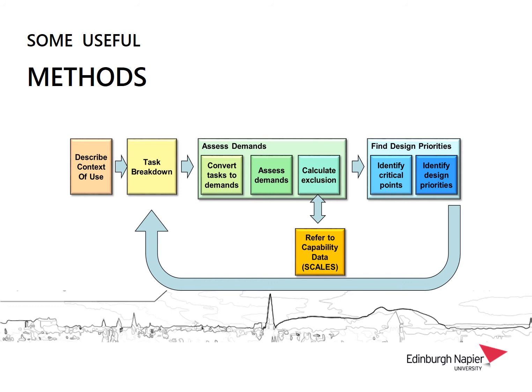Some useful methods that come from inclusive design are based around the idea of iterative design — you go around a loop of design examining the possibilities for inclusion and improving inclusion as you do so. Roughly speaking, you look at the context of use of parts of the system, break it down into a sequence of tasks, and look at how those tasks relate to capability ranges such as hearing, vision, and reach and stretch and locomotion. You assess the demand made by your design, decide how many people might be excluded and what sorts of people those will be. Once you identify critical points or bottlenecks, you look at design priorities for changing the design and then return to the task breakdown again, continuing until you've eliminated as many design bottlenecks as possible.